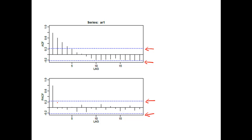After we identify we should use AR, what order should we use for the AR model? We look at how many significant spikes we have in the PACF chart. In this case, we only have one significant spike in the PACF chart, so we should use AR1 model. If you have two significant spikes in the PACF chart, then you should use AR2 model. This is how you identify the AR model order.